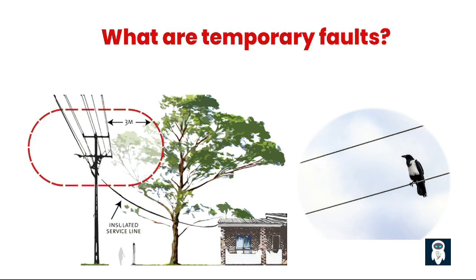Examples of temporary faults include: windblown conductors touching one another; lightning surges flashing over an insulator; birds, reptiles, or small animals bridging between an energized line and grounded surface; tree branches touching energized lines; and switching surges that flash over an insulator.